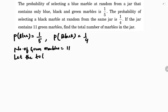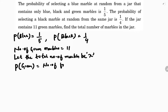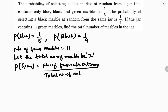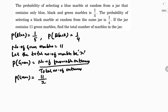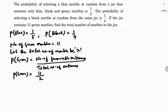Let the total number of marbles be x. So probability of green marble equals number of favorable outcomes by total number of outcomes — that is 11 by x, because there are 11 green marbles and total is x. Now we have probability of green, probability of black, and probability of blue.